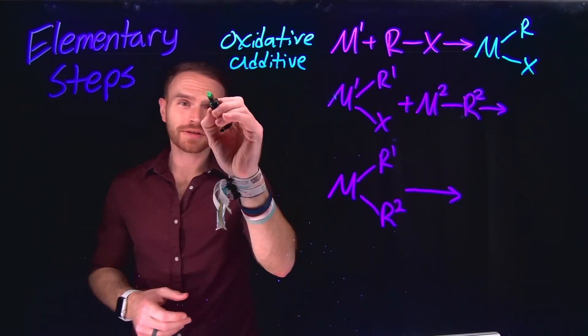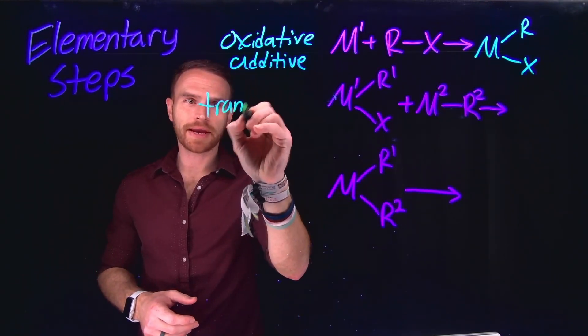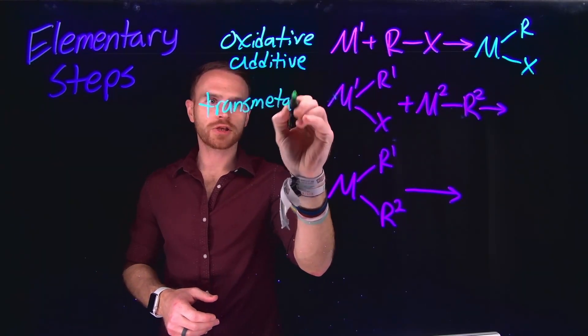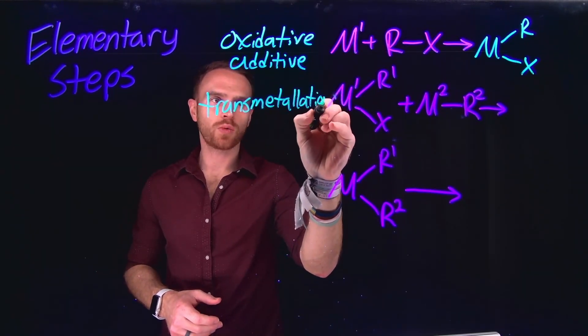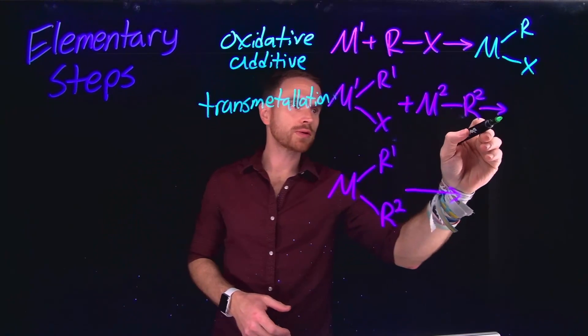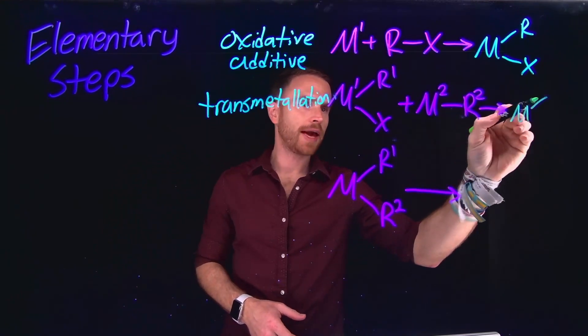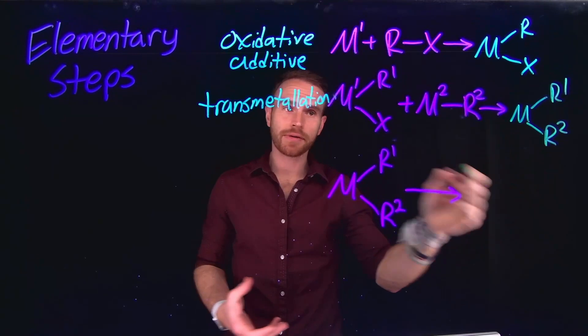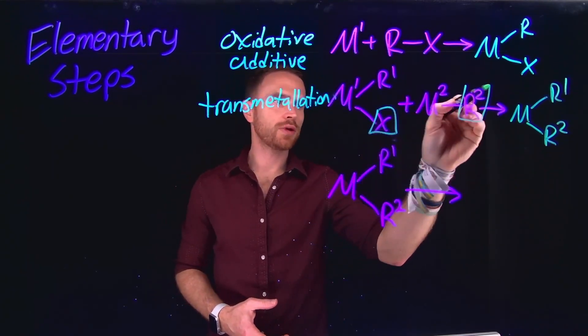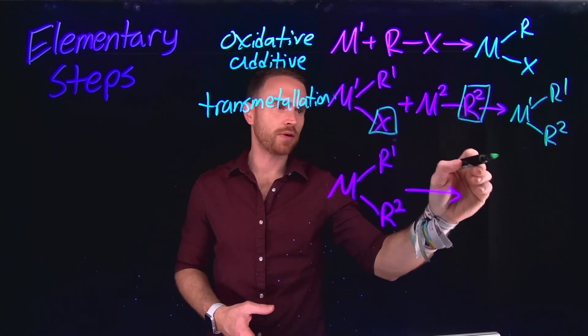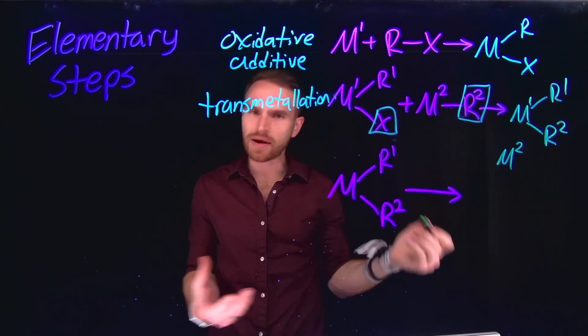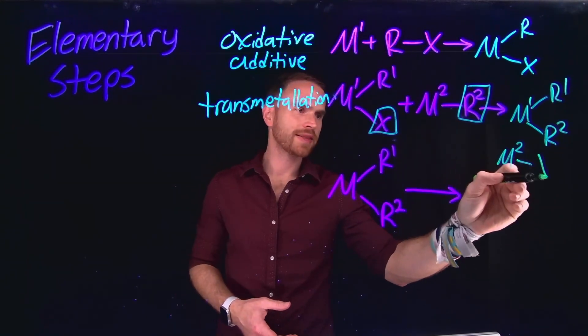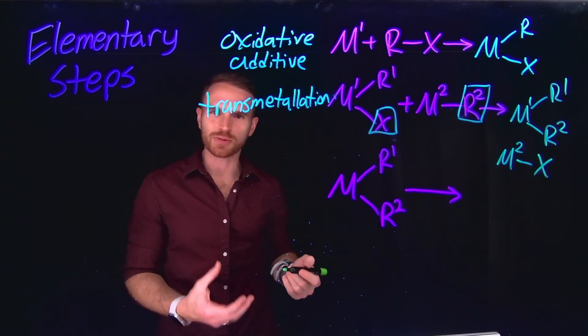Another reaction is called transmetallation, where two metals can exchange groups, which are called ligands, resulting in the formation of a new metal to ligand bond via the exchange of two different ligands on those two different metals. So in the case of transmetallation, you have two metals coming close together that are exchanging the ligands on those metals.